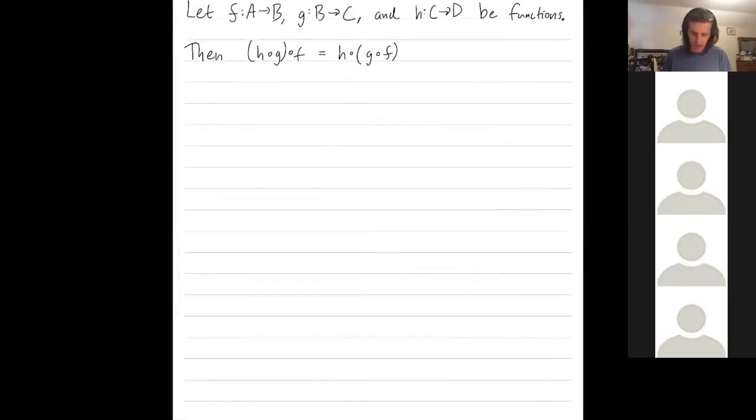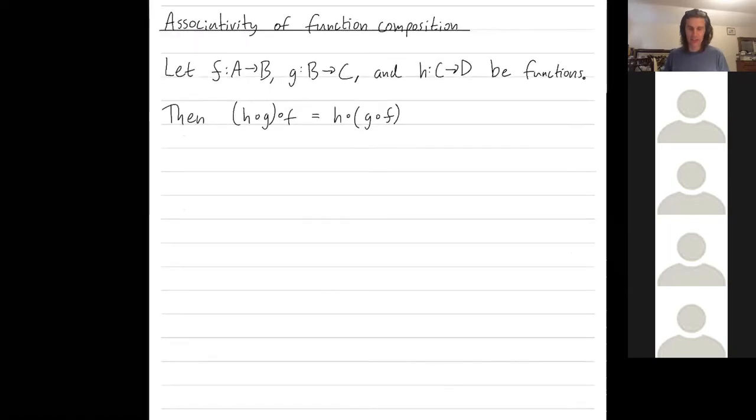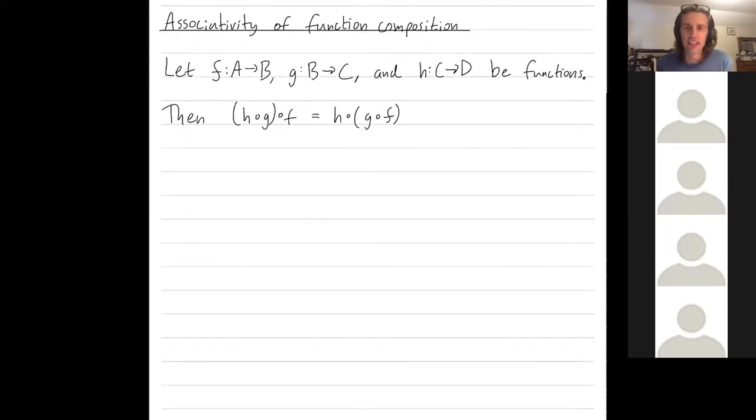So I'm going to consider three functions, f, g, and h, and I've set up their input spaces and their output spaces so that you could do one after the other. So you could apply f first to get something in b, and then you could apply g to take that thing in b to get something in c, etc.